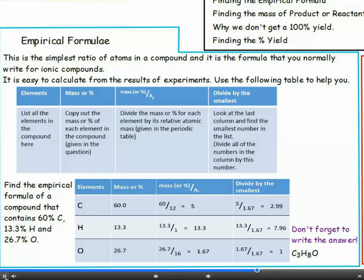At this point, you might have a nice whole number ratio that you can use in a formula. If you don't, then you need to use the last column in the table to help. Find the smallest number you worked out in the mass divided by AR column. Divide ALL the numbers in this column by the smallest one.